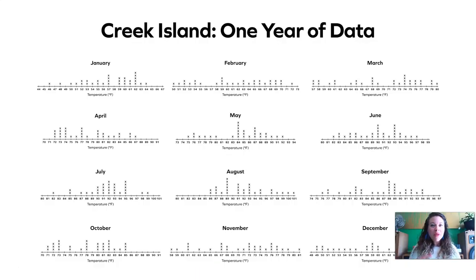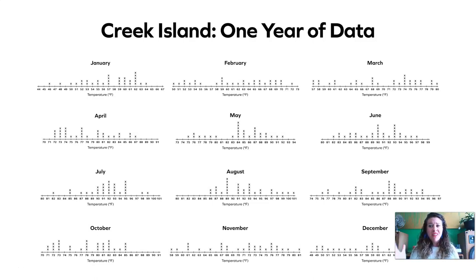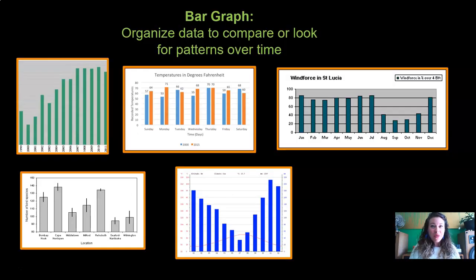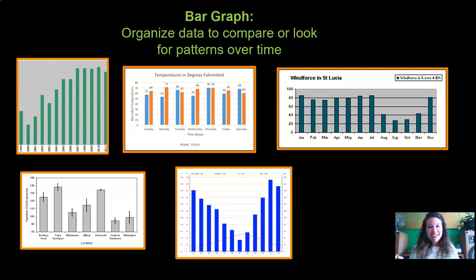Remember in Part 1, we got all of a full year of data from Creek Island, but it was sent to us in line plots, and line plots are really hard to understand and make sense of when you have a lot of them. So we decided we were going to make a bar graph. Do you remember what a bar graph is for? Bar graphs are used to organize data to compare or look for patterns over time.